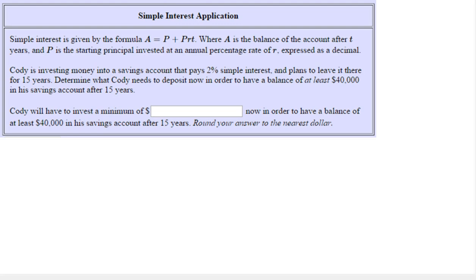Let's begin by reading the question and highlighting important information. Simple interest is given by the formula A equals P plus P times RT, where A is the balance of the account after T years. So A is that future value of the account after your investment has accrued interest. P is the starting principal invested. That's how much you initially put into the account. At an annual percentage rate of R, which we write as a decimal.